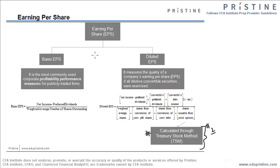That topic is basically the Treasury Stock Method. To explain this Treasury Stock Method, I have built a context using the Earnings Per Share concept. There are two types of Earnings Per Share, or EPS. The first one is basic EPS, which is most commonly heard of and most commonly used in profitability performance measures.